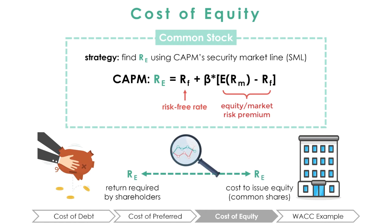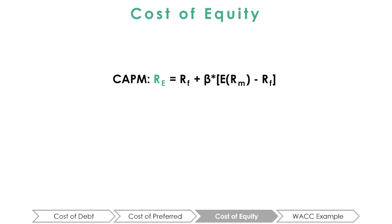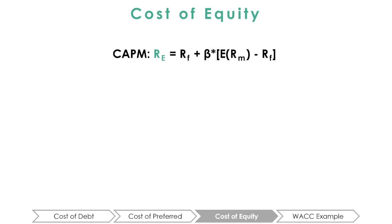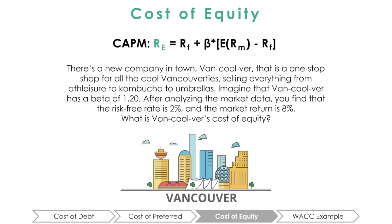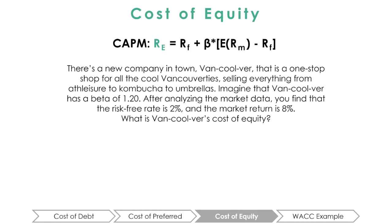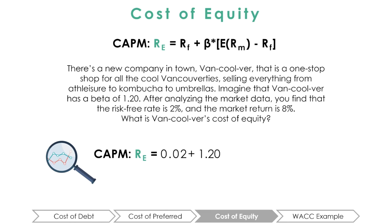Let's do a question together to refresh your memory. Let's check back in with our neighborhood shop, Vancouver. Pause this video and try this question yourself. When you are ready, resume the video and we will go over the answer together. All the numbers have been given to us, so we can simply plug them in. We have RE = 2% + 1.2 × (8% − 2%), which equals 9.2%.